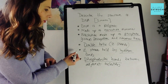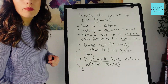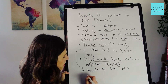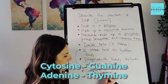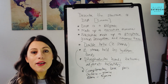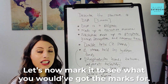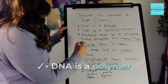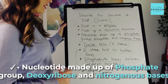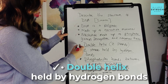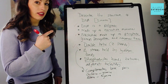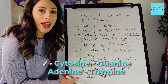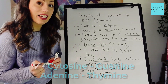One extra thing I'm going to add is complementary base pairs — cytosine and guanine, adenine and thymine — because we should be naming those bases somewhere in this question. So we've got five marks covered for that five mark question. Now let's mark it. One mark for DNA is a polymer. Another mark for what the nucleotides are made up of. Another mark for the double helix held by hydrogen bonds — so those two bullet points were worth one mark, which is why it's always worth giving extra bullet points. A mark for phosphodiester bonds and the final mark for stating the complementary base pairs and which go together. Five marks.